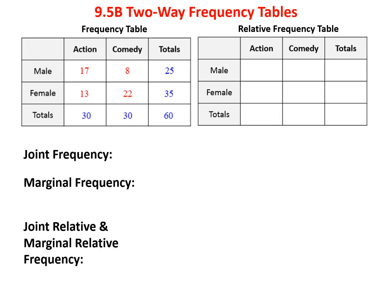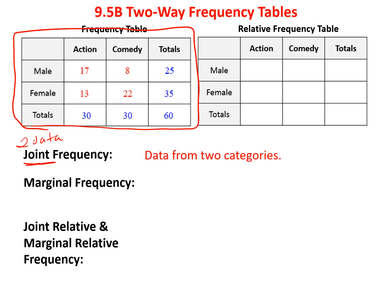In our last lesson, we looked first at joint frequency and marginal frequency. We created a frequency table here — frequency just means the number of times. We surveyed 60 people, men and women, and asked them whether they preferred an action movie or a comedy movie. Joint frequency means there are two sets of data. For example, the 17 represents 17 men who preferred action, and 8 men who preferred comedy. They're joint frequencies because they have to do with both action and comedy.